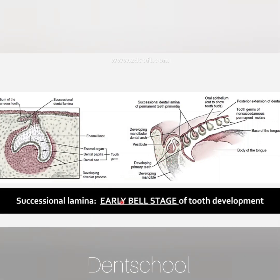The important point to note here is that the successional lamina is seen in the early bell stage of tooth development.